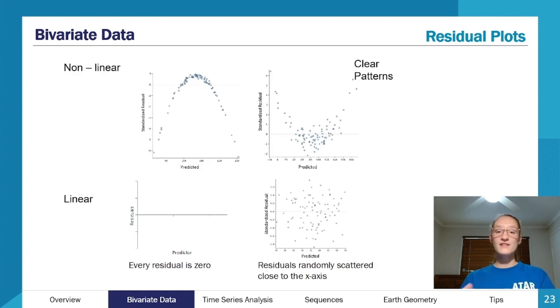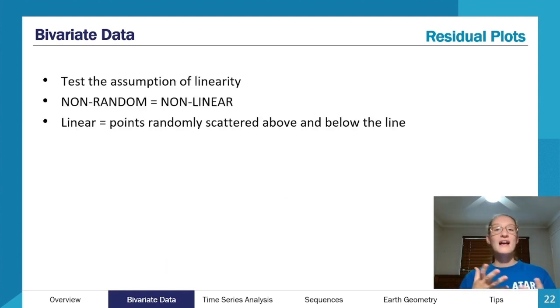That's how we determine whether a linear relationship is present or not. So a residual plot might look something like one of these. How do we actually interpret a residual plot? They exist to test the assumption of linearity. So if we're constructing a residual plot, our goal is to figure out if a linear relationship is present. The most important thing to remember, the handiest way that sticks in my brain, is if it's non-random then it's non-linear.